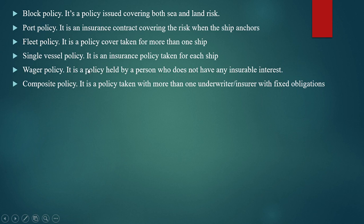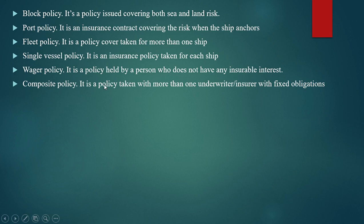Wager policy is a policy held by a person who does not have any insurable interest. It is also sold as private-owned property. Since the policy only covers your own property and not the property of your neighbor, it does not cover any insurable interest. Composite policy is a policy taken with more than one undertaker or insurer with fixed obligations.